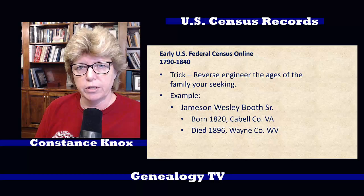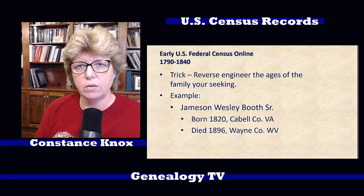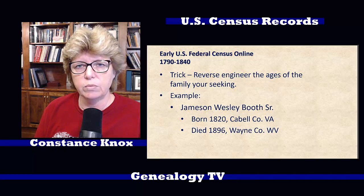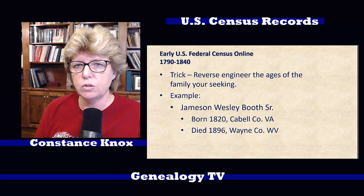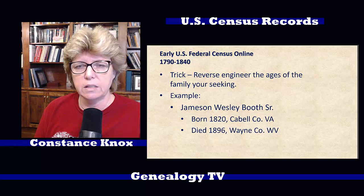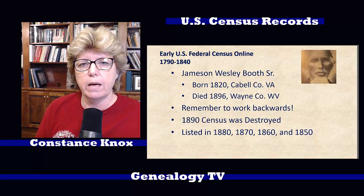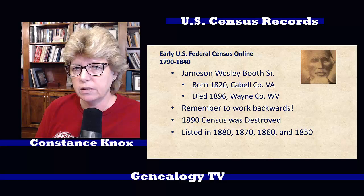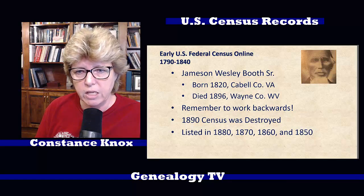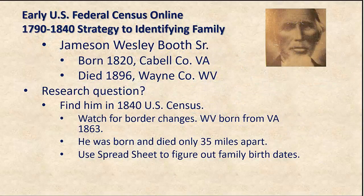We're going to learn this trick about how to identify a family in an 1840 census. We're going to reverse engineer the ages of the family for which you're seeking. In this case, we're going to take Jameson Wesley Booth Sr. He was born in 1820 in Cable County, Virginia, and he died in 1896 in Wayne County, West Virginia. We know the 1890 census was destroyed, and we know he is listed in 1880, 1870, 1860, and 1850. From that information we were able to glean information.